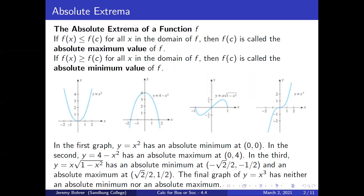In the third graph, y = x√(1 - x²) has an absolute minimum at (-√2/2, -1/2) and an absolute maximum at (√2/2, 1/2). The final graph of y = x³ has neither an absolute minimum nor an absolute maximum.